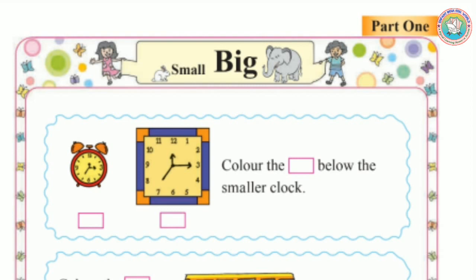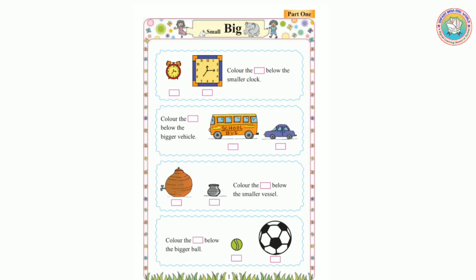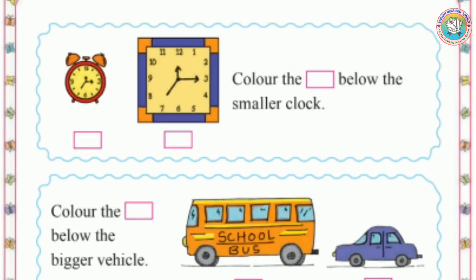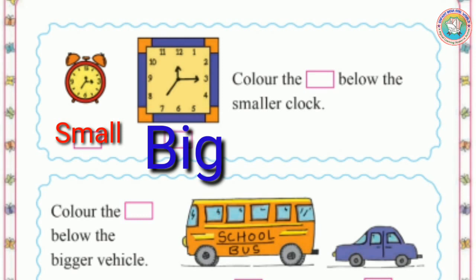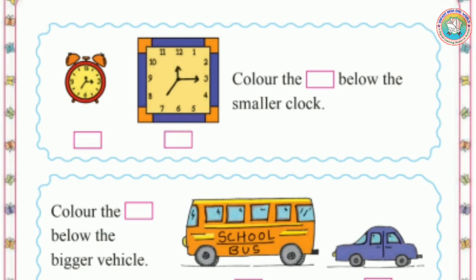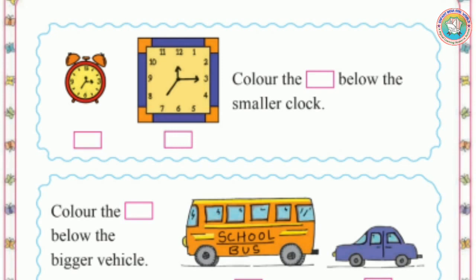Now look at this picture. You can see two clocks — a red color clock and a blue color clock. The red color clock is small and the blue color clock is big. So the red clock is smaller than the blue clock.